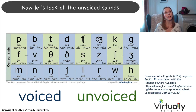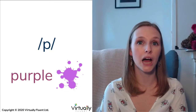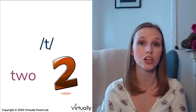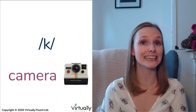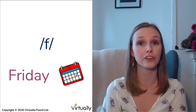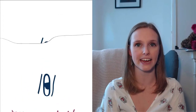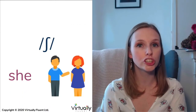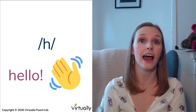Now let's look at the unvoiced sounds — these are softer and calmer. P, like in purple; T, like in two; CH, like in chips; K, like in camera; F, like in Friday; TH, like in Thursday; S, like in Sunday; SH, like in she; H, like in hello. And now those are all the unvoiced sounds.